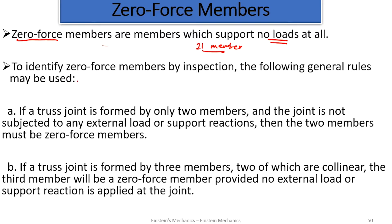To analyze a zero force member by inspection, the following general rules may be used. We have two rules for analyzing zero force members, and once you stick to them you can remove all the zero force members from a truss. First rule: if a truss joint is formed by two members and the joint is not subjected to any external load or support reaction, then the two members must be zero force members.